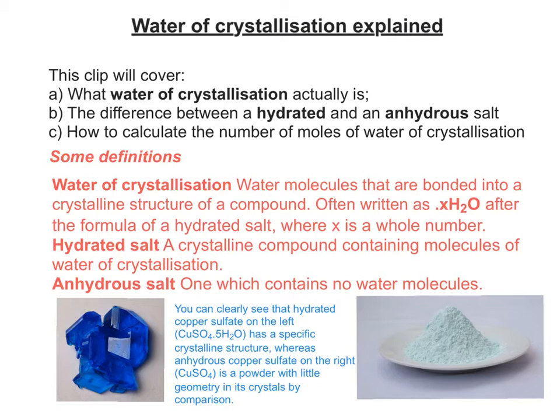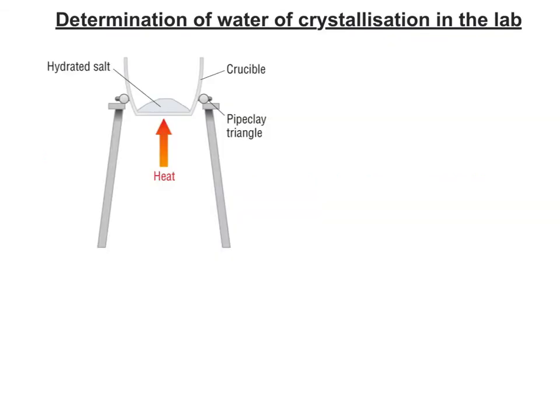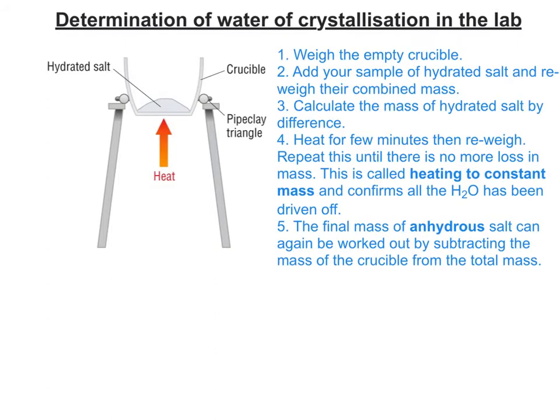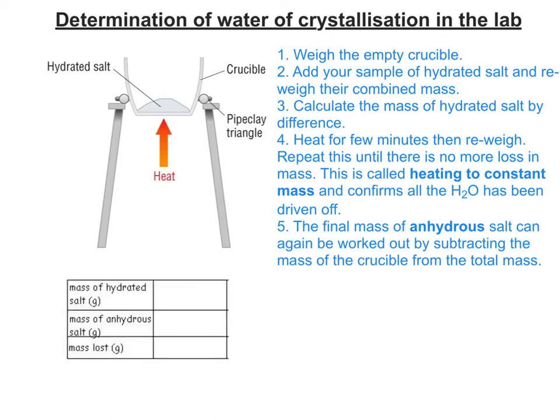Let's have a look at some of the practical work you might have come across to do with water of crystallisation. This is the apparatus that's generally used to allow the determination of how much water of crystallisation you actually have. It's a fairly simple procedure using this type of apparatus, and that allows us to generate some data that we can record in a table. The mass lost will be your water of crystallisation.